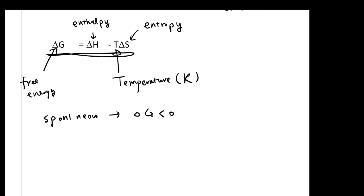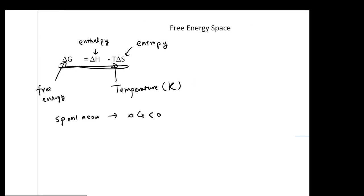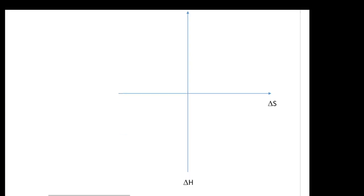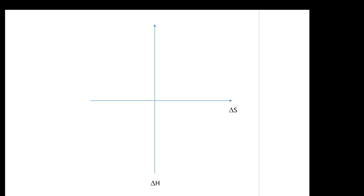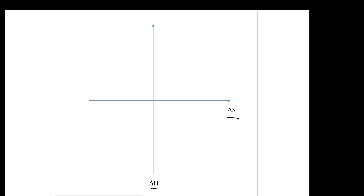Depending on the values of ΔH and ΔS, in certain conditions ΔG will always be negative, and in others always positive. We use two-dimensional coordinates to make this clear: the x-axis is ΔS, the y-axis is ΔH, divided into four different quadrants.